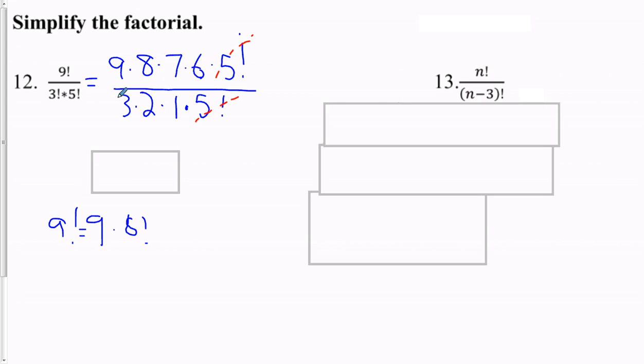5 factorial cancels with 5 factorial. And then what else do I have? 3 can cancel here or here. 3 and 2 would cancel out with 6. 3 divided by 3, I get 2, and then I have a match of 2 on both top and bottom. And so this would leave me with 9 times 8 times 7, or computing it out, 504.